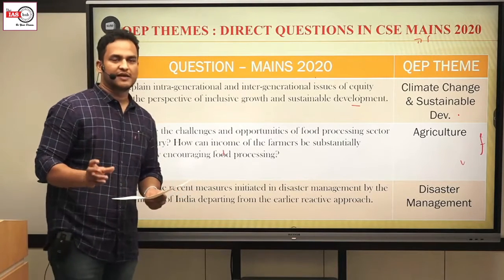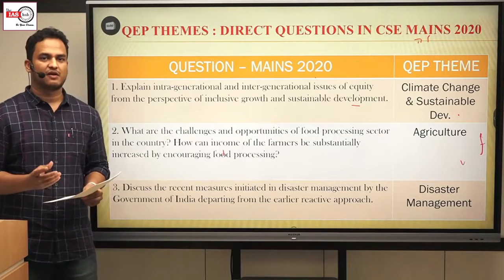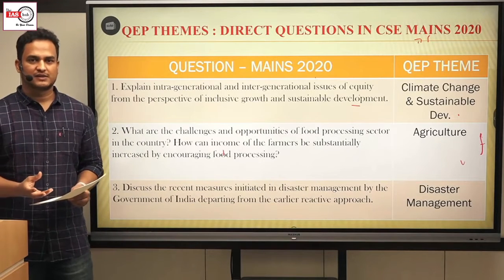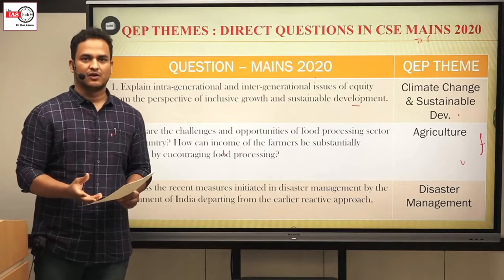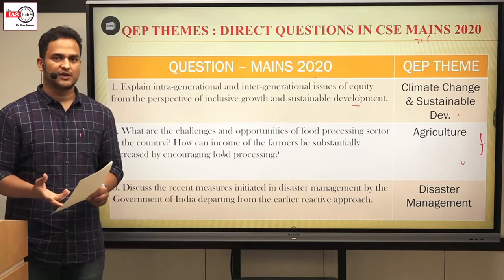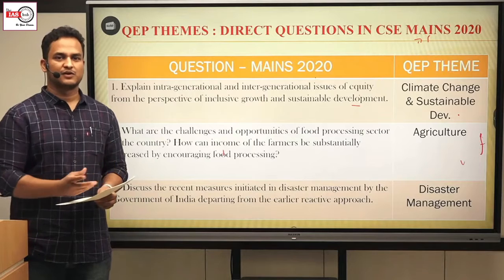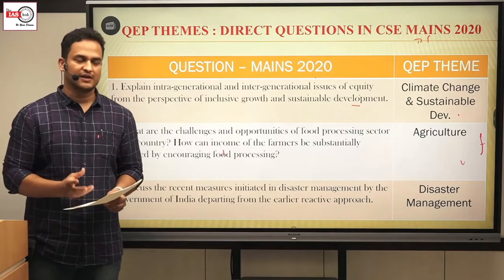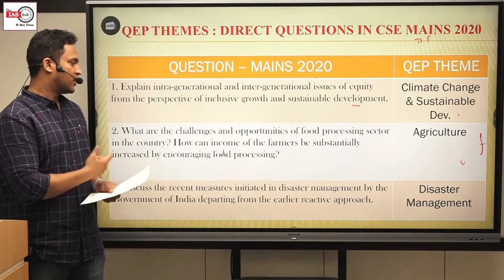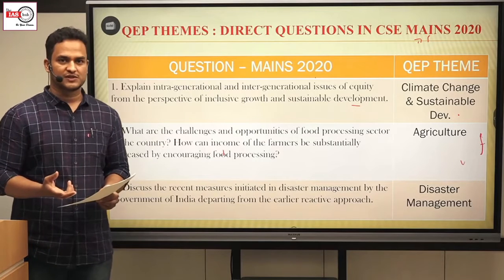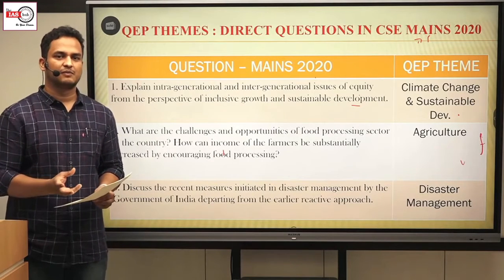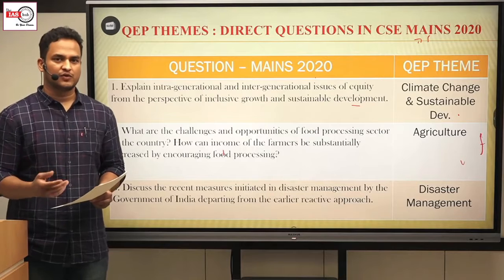Sir had told that in every agriculture answer, facts must be given. For horticulture, I used the fact that 33 percent of GDP is contributed by horticulture products while only 16 percent of the land is used. Especially horticulture products go for food processing, so this data was easily available and I could write it in my introduction.